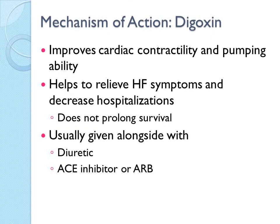Digoxin, or Lanoxin, derived from the digitalis plant, is used to treat heart failure, atrial fibrillation, and atrial flutter. It is primarily given orally as a tablet or elixir. The elixir is absorbed more effectively than the tablet and is used primarily with infants and children. Differences in bioavailability are important because a person stabilized on one preparation may be underdosed or overdosed if another brand is administered. It is usually given alongside a diuretic, ACE inhibitors, or ARBs as a combination for heart failure.